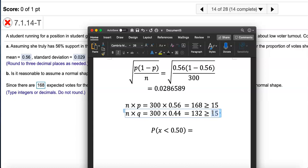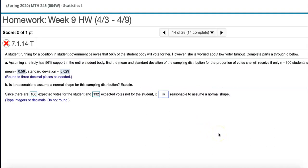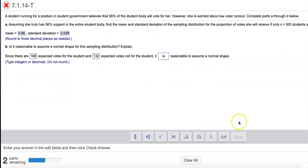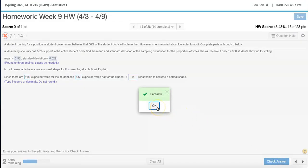Notice 132 is also greater than or equal to 15. If these numbers are bigger than 15 then we can assume it is reasonable to assume normal shape. If one of these numbers come out to be smaller than 15 then we can't assume normal, but now we can assume normal.